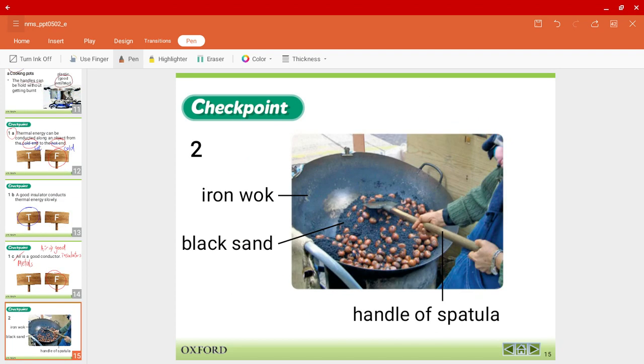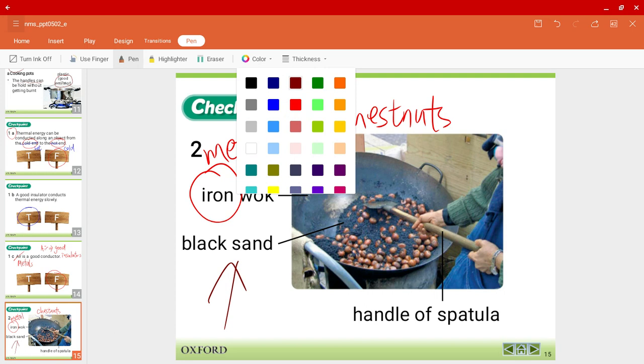Let's see question two. You probably have seen this on the streets. It's very common. These are called chestnuts. Usually you would notice that there's an iron wok. Iron is a metal, so that tells us that they're using this mainly for conduction purposes. Sometimes you will notice that there is black sand inside. I also want you to focus on the handle of the spatula.